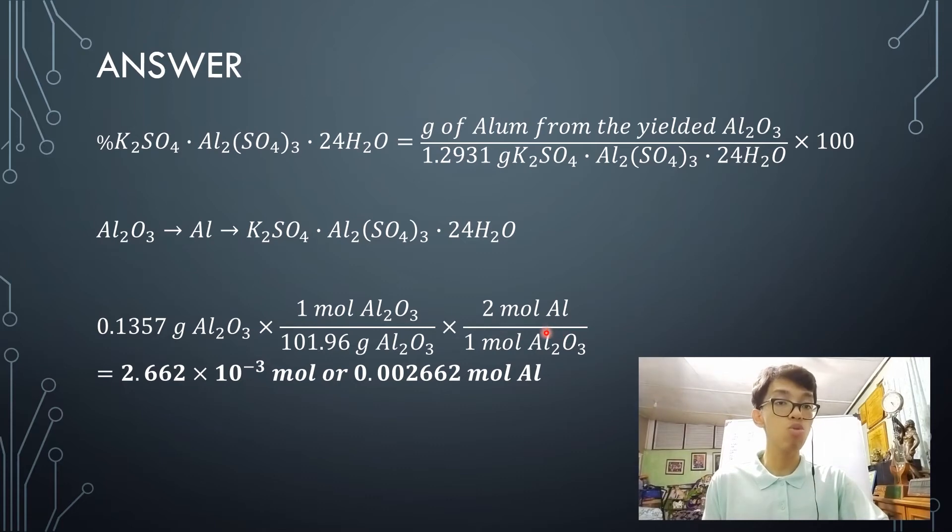Why is that so? Look at the formula of aluminum oxide. It's Al2O3. Therefore, there are 2 aluminum atoms there. Therefore, there are 2 moles of aluminum and aluminum oxide. Now, solving for that, you're going to come up with the answer of 2.662 times 10 to the negative 3 moles or 0.002662 moles of aluminum.